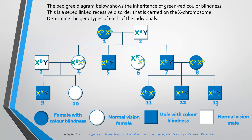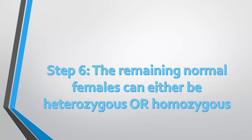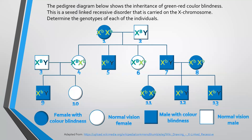We're only left with number ten. The remaining females can either be heterozygous or homozygous — we won't be sure. So if asked about them, you give two options: either homozygous with two normal alleles, or a normal allele with a recessive allele. You won't be 100% sure.